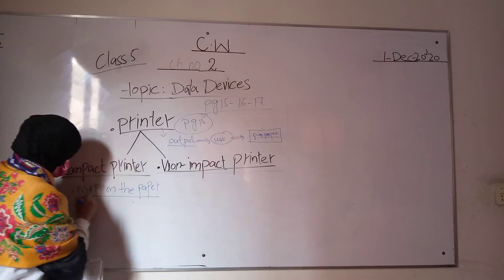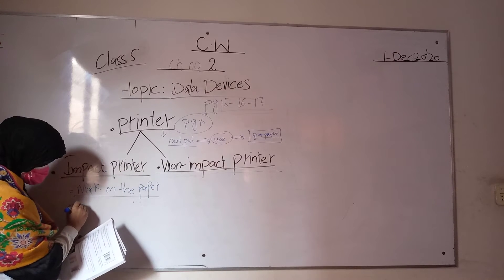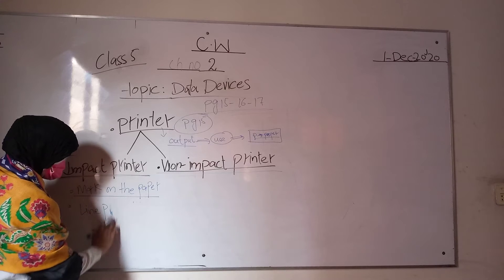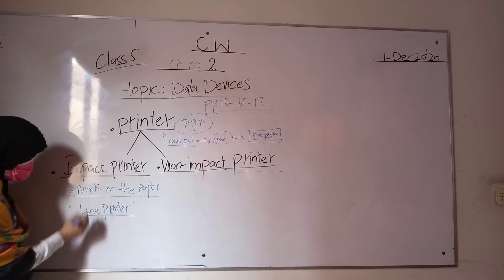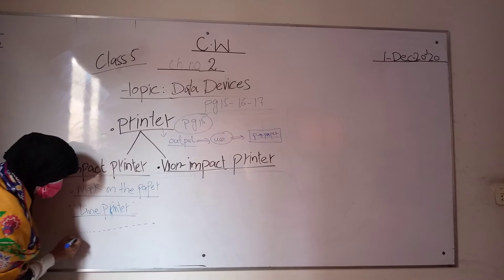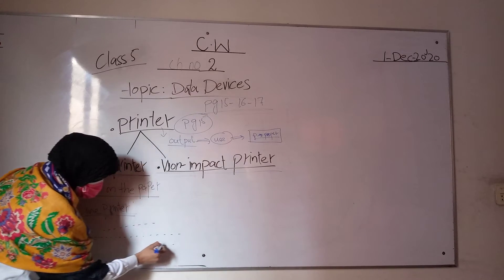Impact printers make marks on the paper. This includes line printers, which print line by line.